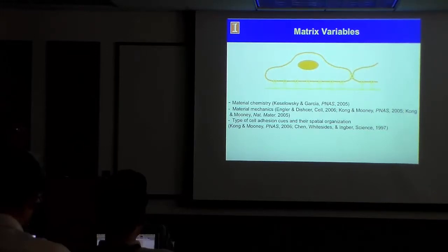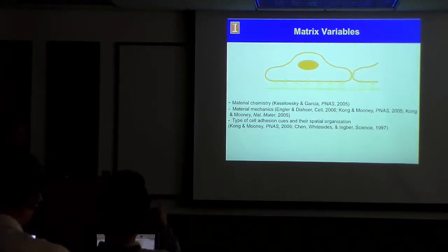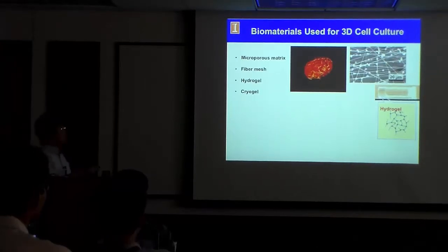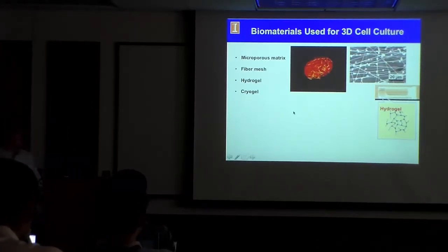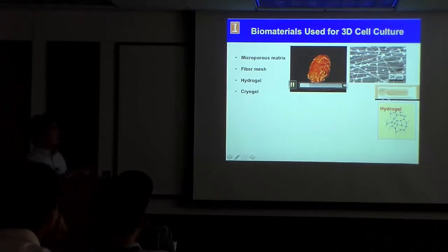For example, a person with diabetes will have tissue that is softer than normal, with changed permeability. In the case of cancer, the tissue is known to be stiffer than normal, with lower permeability, and more cell adhesion proteins such as fibronectin at the tumor site. To reproduce such changes in chemical and mechanical properties of the extracellular matrix, people have used different types of biomaterial systems for 3D cell culture, including microporous matrices and fiber meshes to mimic collagen fiber structure.